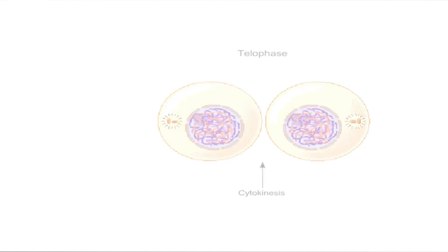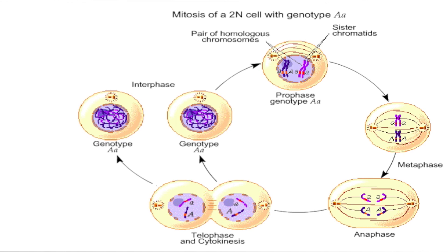Mitosis is a highly ordered process in which one copy of each duplicated chromosome is segregated into each of the two daughter cells. The end product of mitosis is two cells genetically identical to each other and to the parent cell from which they arose.